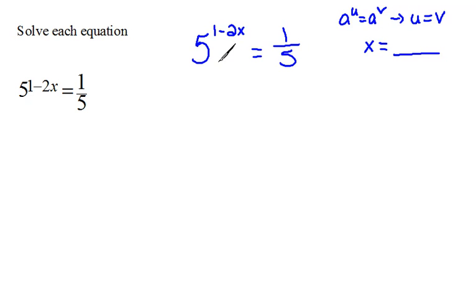Looking at the left and the right side, I can see that both of them are so close to 5. I see that. I see a 5 here and a 5 here. Is there some way that I could turn 1 fifth into a 5 rather than a 1 fifth?